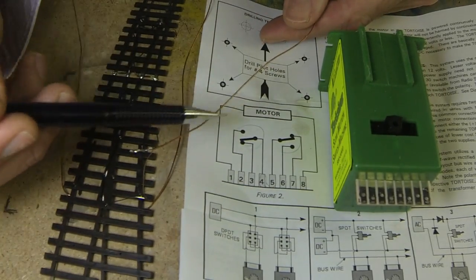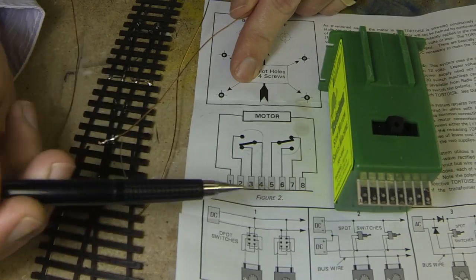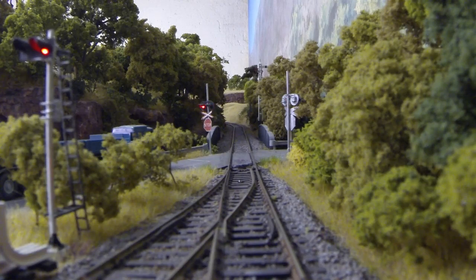Alternatively, connect terminal 5 to the frog power wire and connect 6 and 7 to left and right rail. Terminals 1 and 8 are used to move the tortoise motor. Thanks for watching and good luck!